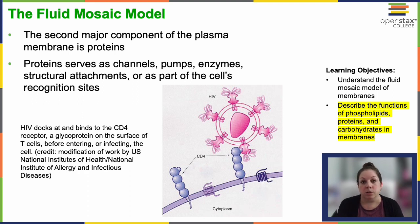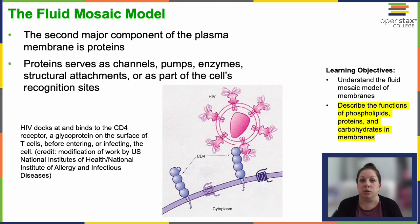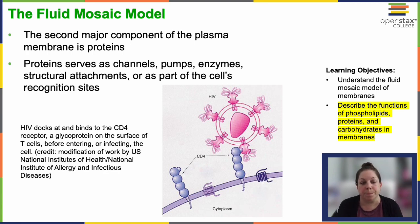But it's not the only virus that uses our own receptors against us. COVID — the coronavirus that caused the COVID-19 pandemic — also took advantage of certain types of receptors, particularly on respiratory system cells and a whole array of others as well.